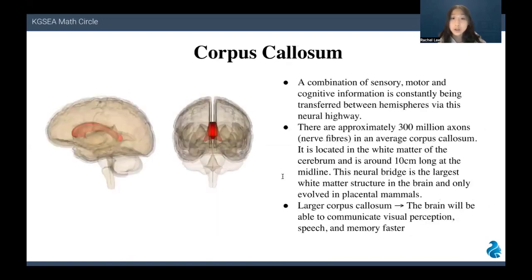Lastly, we will talk about the corpus callosum. It is a combination of sensory, motor, and cognitive information that is constantly being transferred between hemispheres via this neural highway. There are approximately 300 million axons, which are nerve fibers, in an average corpus callosum. It is located in the white matter of the cerebrum and is around 10 cm long in the midline. Larger corpus callosum means that the brain will be able to communicate visual perception, speech, and memory faster. These can be the reasons why Einstein could show extraordinary creative skills in math. Thank you for listening.